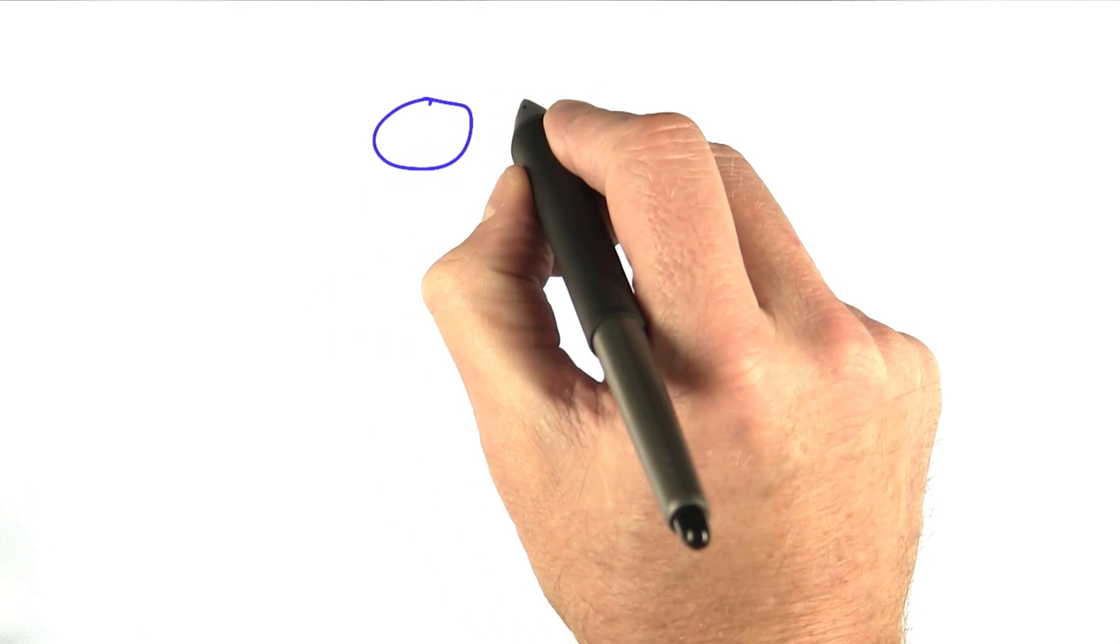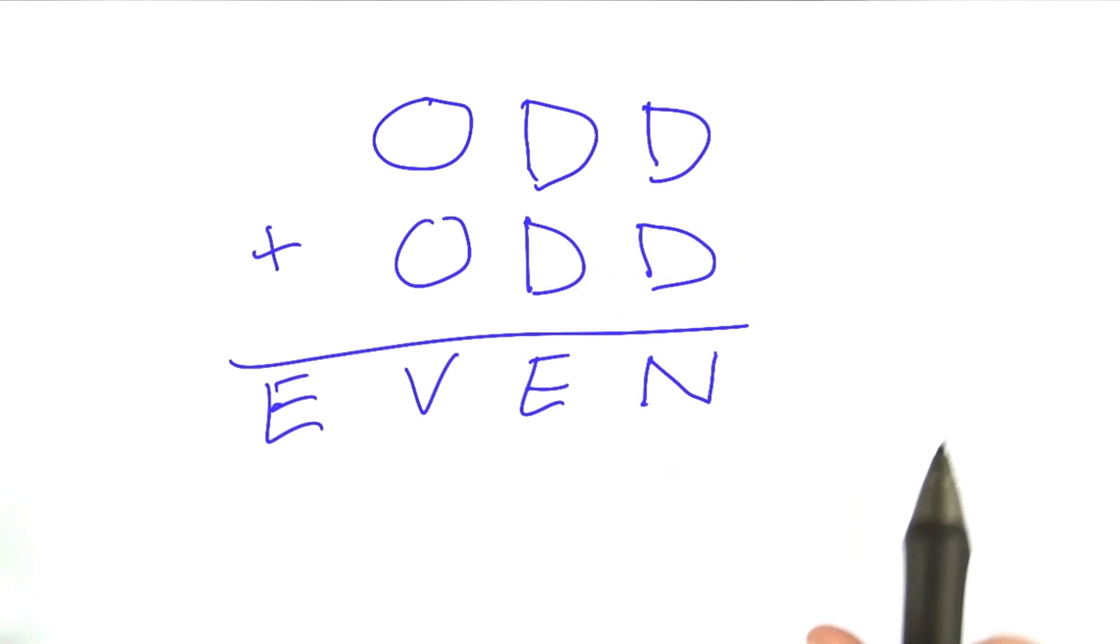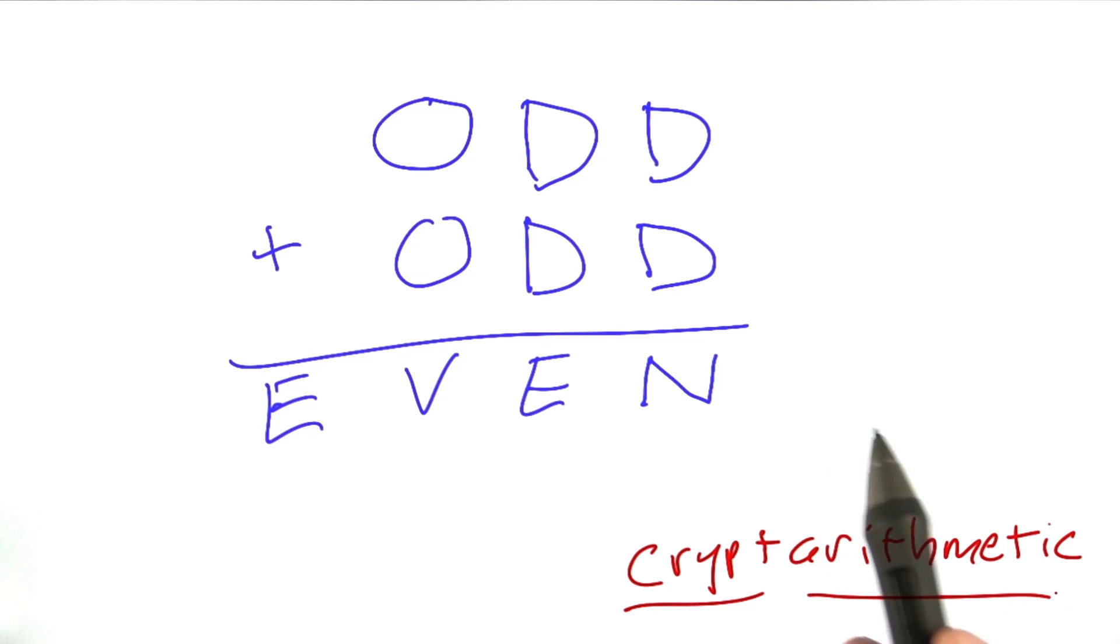Now we're going to turn our attention to a different type of puzzle. This is called a cryptarithmetic problem. Crypt for cryptography, secret writing, and arithmetic for arithmetic, doing addition and other types of problems.